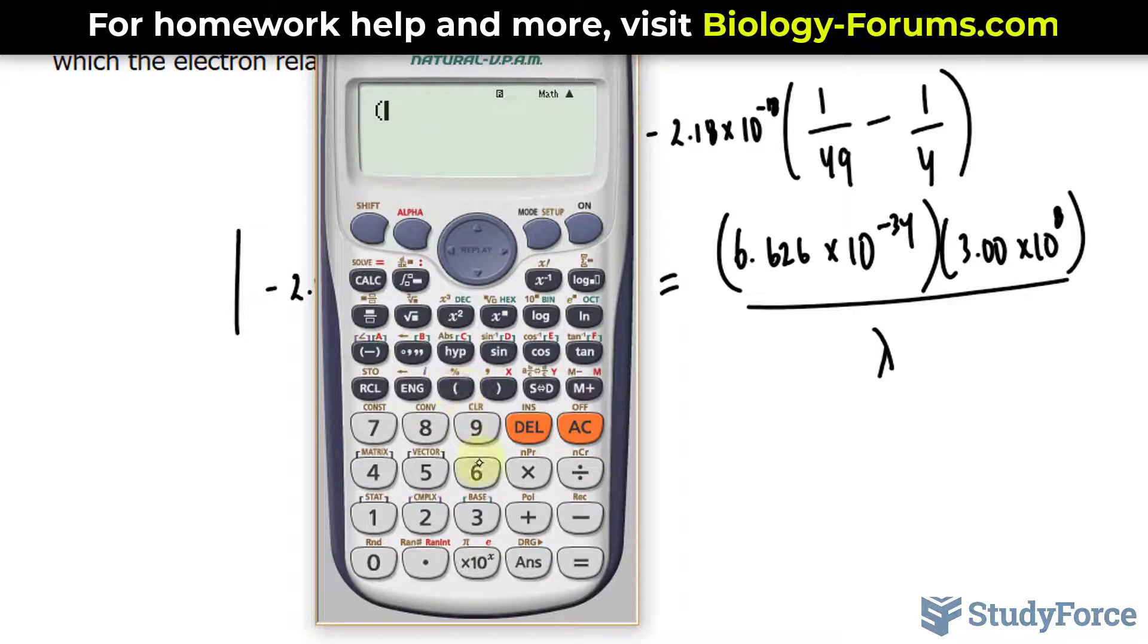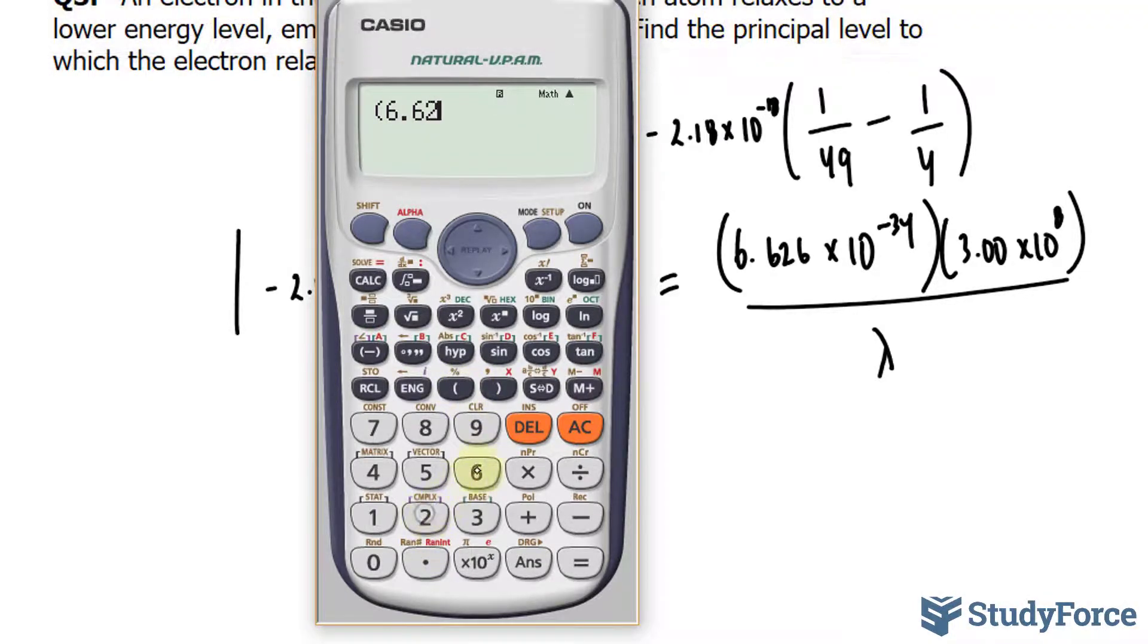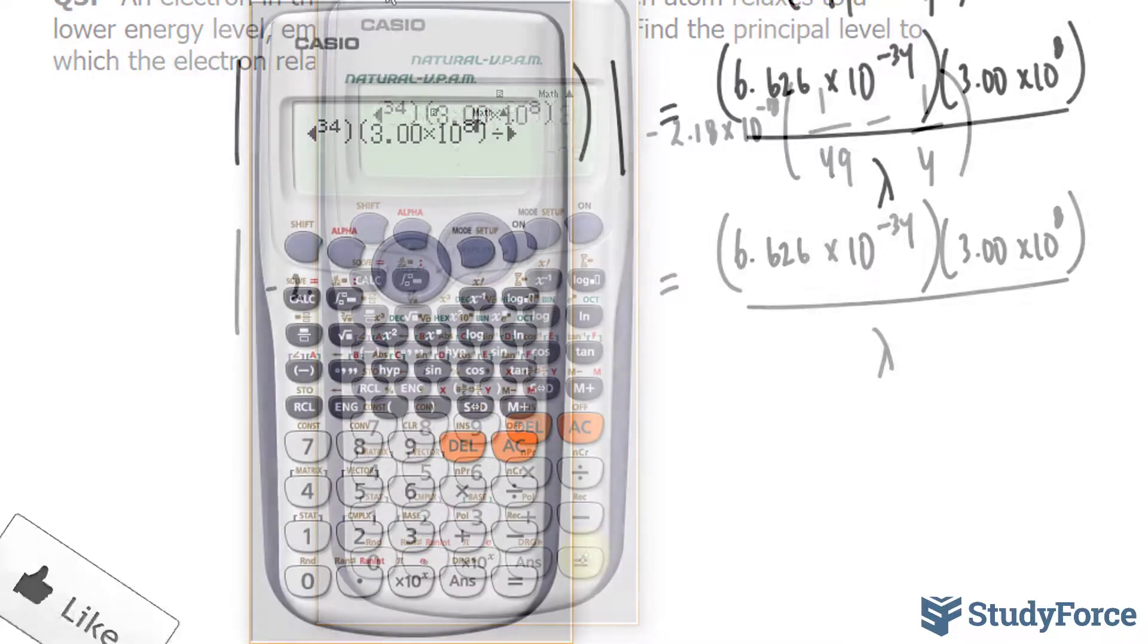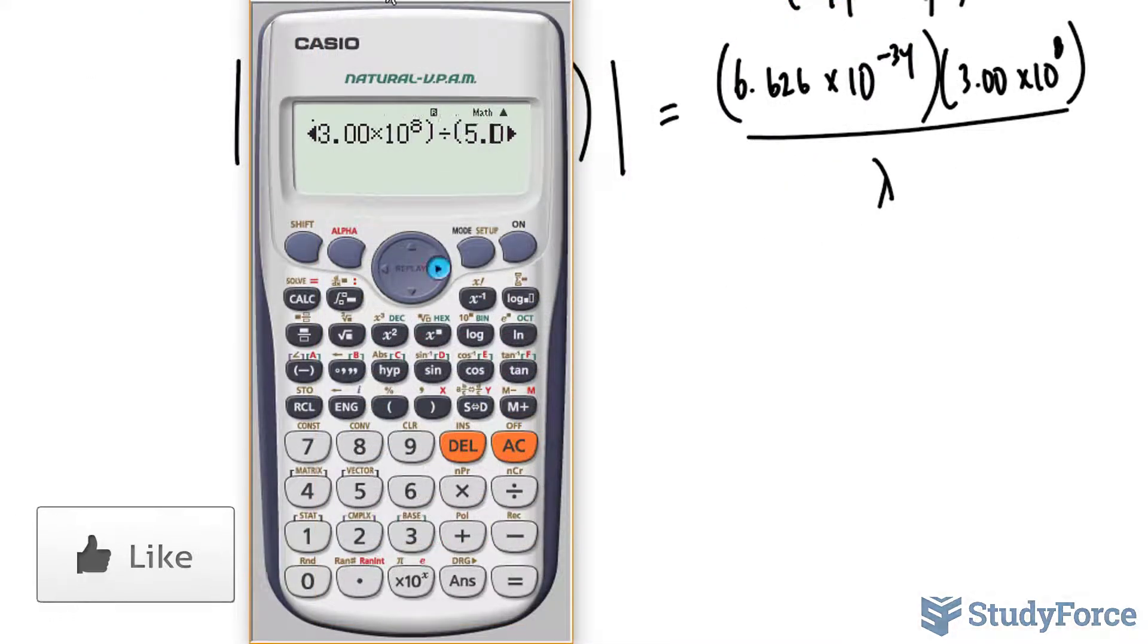We have 6.626 times 10 to the power of negative 34, times 3.00 times 10 to the power of 8. And all of that is being divided by the number you see on your screen.